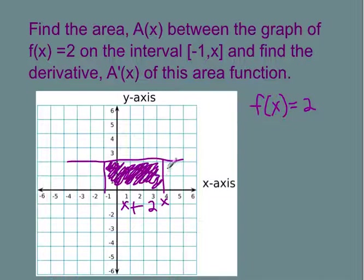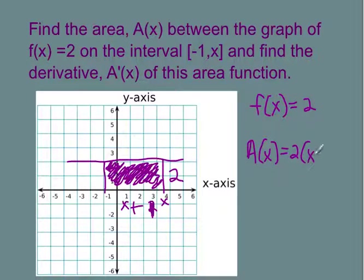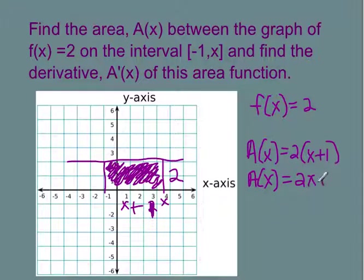And then I know that this height is 2. So the area function is going to be A of x equal to base times height of a rectangle — the height is 2 times x plus 1. So I get that my area of x is equal to 2x plus 2.